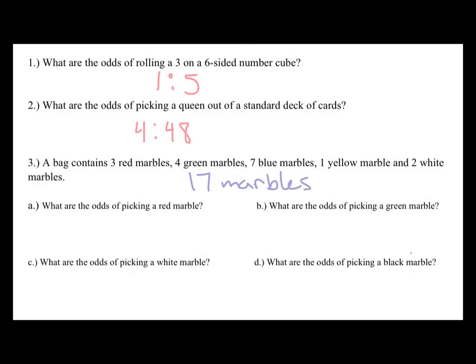So it says, what are the odds of picking a red marble? Well, favorable would be 3, because there are 3 red, which means there are 14 that would be unfavorable, or ones that aren't red. So 3 to 14. 3 plus 14 is 17.